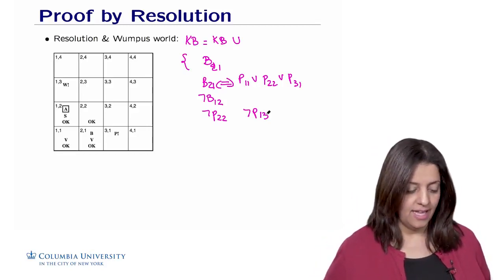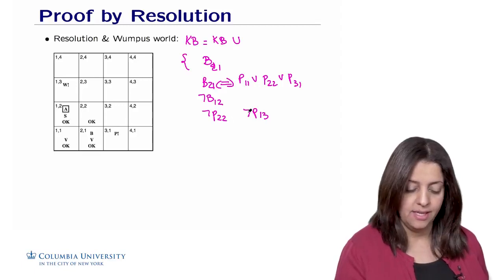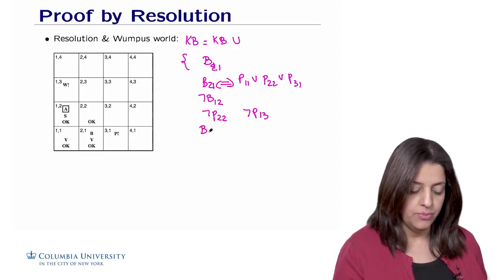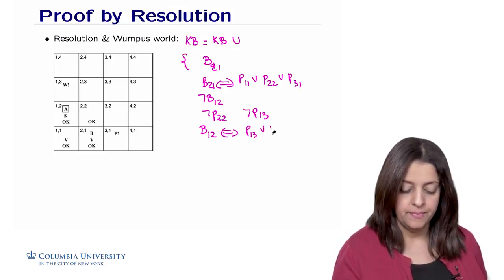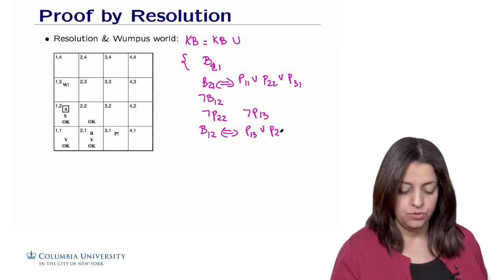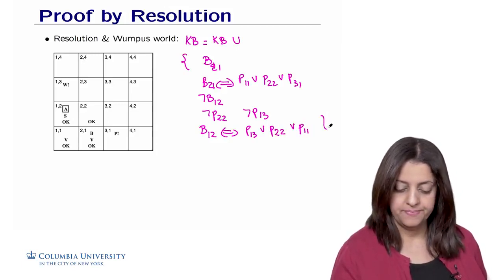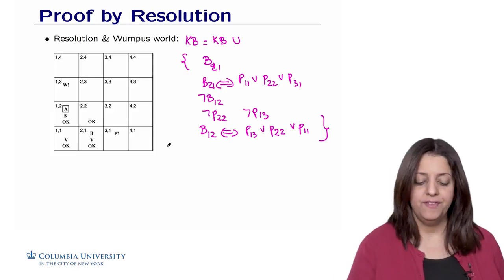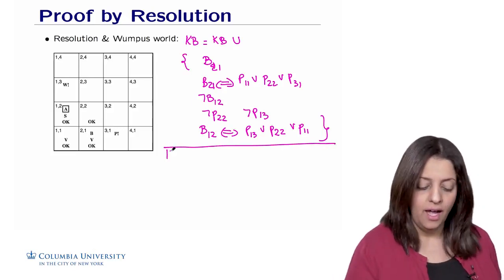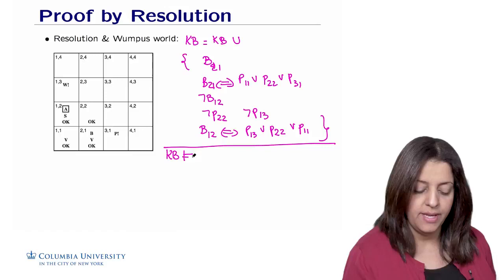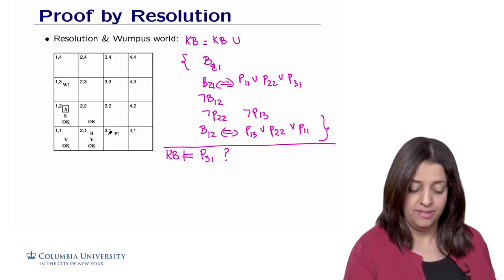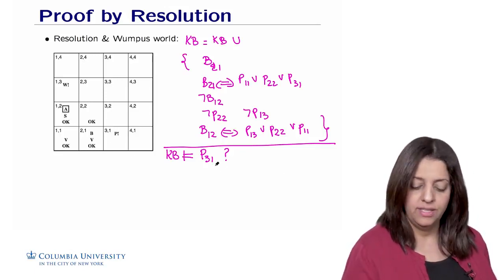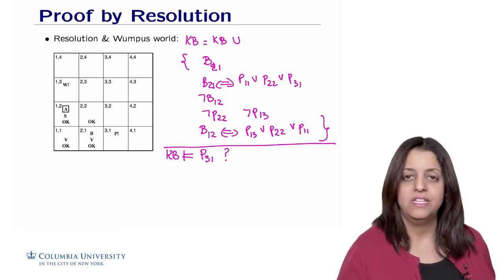We also have the fact that if there is a breeze in 1-2, then there is either a pit in 1-3, a pit in 2-1, or a pit in 1-1. With this knowledge base, the question is whether we can infer — or entail — that there is a pit in 3-1. It turns out there is, and the agent will infer this through the inference method called resolution.